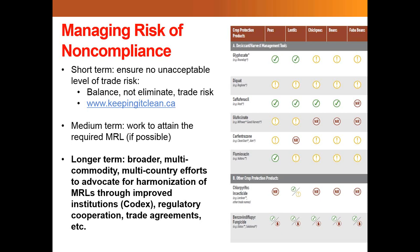One of Canada's comparative trade advantages is that we can comply with all these difficult and often competing and misaligned international standards, and Keep It Clean is a way to help us continue to do that. That's the short term. It's not really a good medium or long-term strategy to not be able to use important technologies to grow crops. Medium term, we want to work to attain the required MRL in the jurisdiction if that's going to be possible. Some jurisdictions don't have regulatory guidance for applying for an MRL when they don't have a domestic registration of that particular crop protection product — that's called an import tolerance.